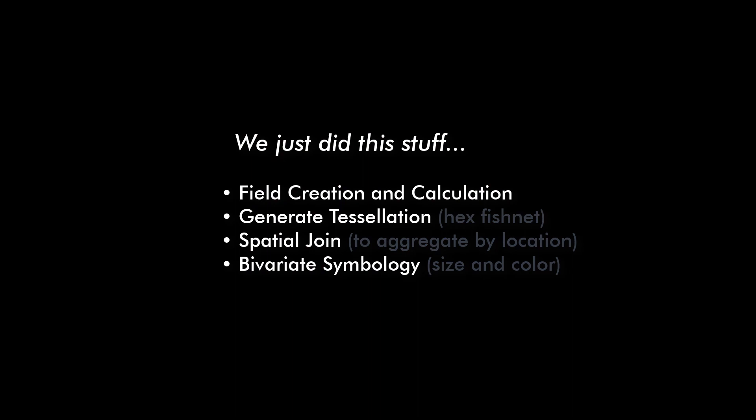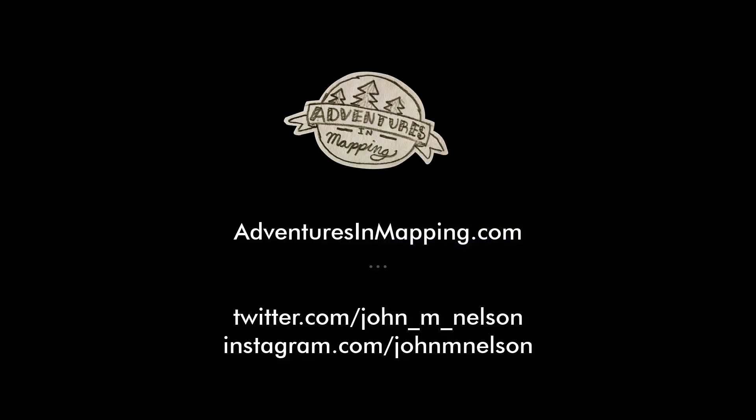So what have we just done? We created a field and populated it, generated a tessellation, did a spatial join — which is black magic amazing stuff — to geographically aggregate data, and played around with bivariate symbology using color for intensity and size for duration. Thank you for spending this time with me. I hope you learned some tips and tricks, and we'll see you next time on video number three.